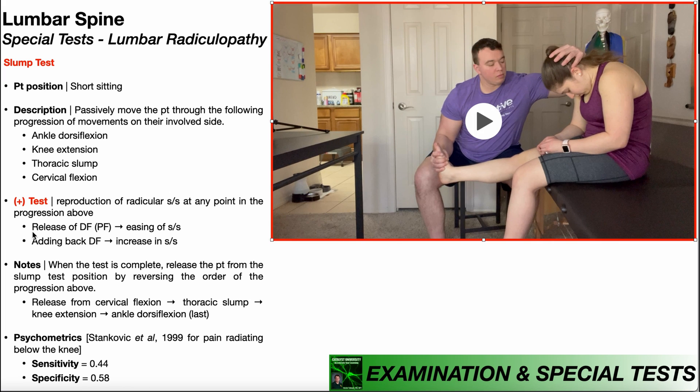Similar to Braggart's sign discussed in a previous video, you can release some of the dorsiflexion — put the foot into a little plantar flexion. Plantar flexion puts slack on the nerve roots, and if you put slack on the nerve roots, you should expect an easing of radicular symptoms into that lower extremity. You can also add back dorsiflexion and even try to get a little more, which should increase symptoms because dorsiflexion tensions the nerve roots. Changing between tension and slack should change the degree of radicular symptoms in someone with a lumbar radiculopathy.